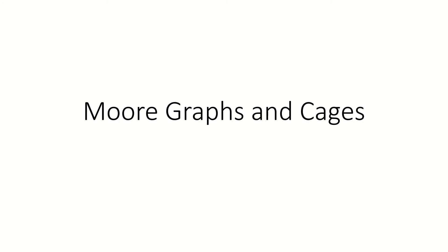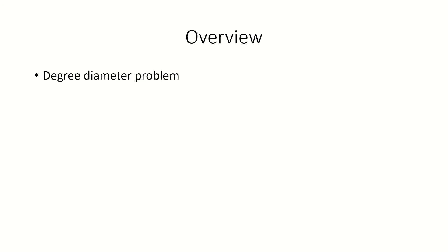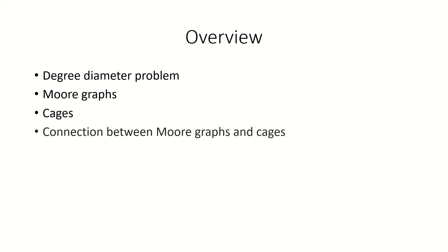Today we're going to discuss the relationship between Moore graphs and cages. We'll start with the discussion of the degree-diameter problem, from which we'll move on to Moore graphs, and then to a special type of graph known as a cage. Finally, we'll look at the connection between Moore graphs and cages, and how we can extend the idea of a Moore graph to graphs with even girth.